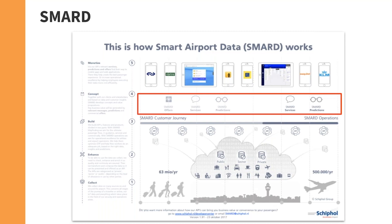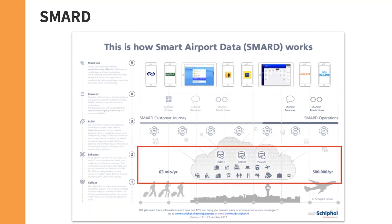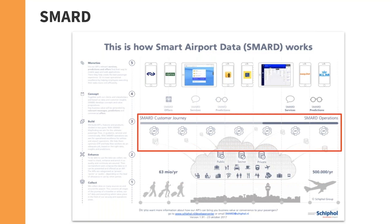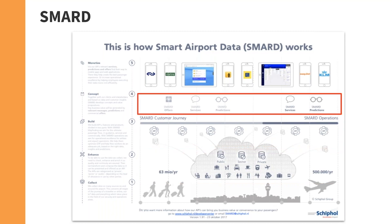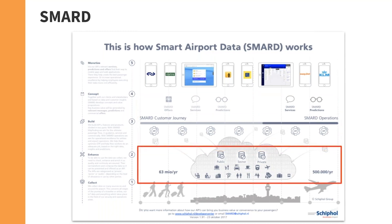Underneath these services are APIs, and underneath that is the data. You can see the levels that FME plays — certainly getting the data all pulled together to support the APIs. We can also build APIs with FME Server, and also services. Once you build that, you can really start to take your airport to the next level.